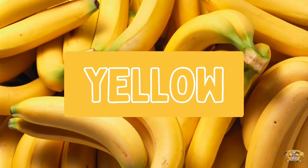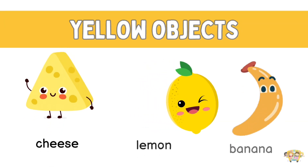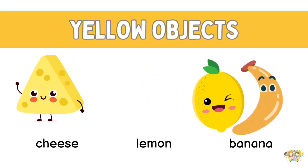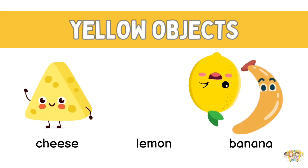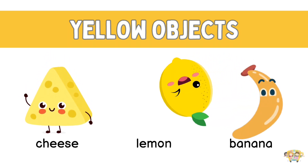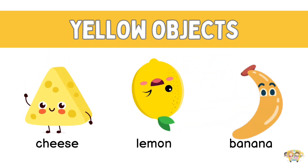Next, we have the color yellow. Objects that are yellow are cheese, lemon and banana.